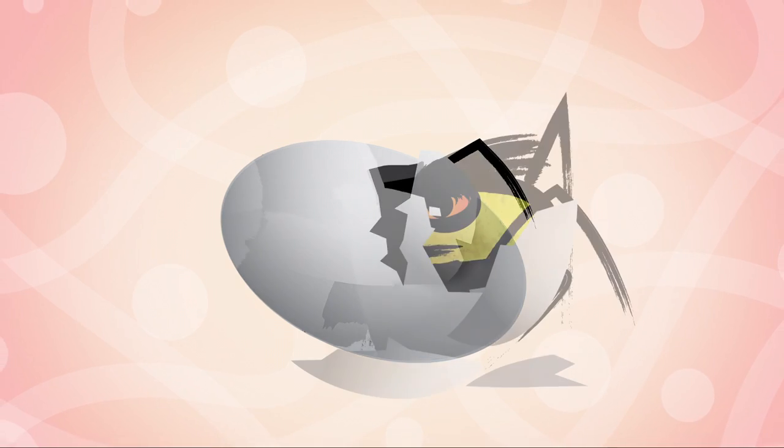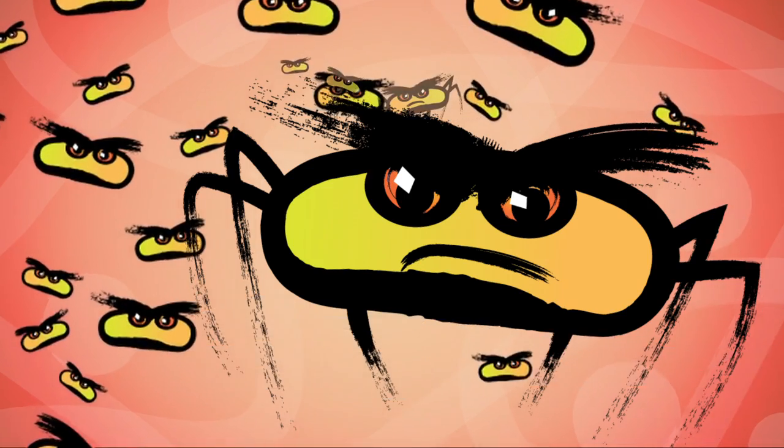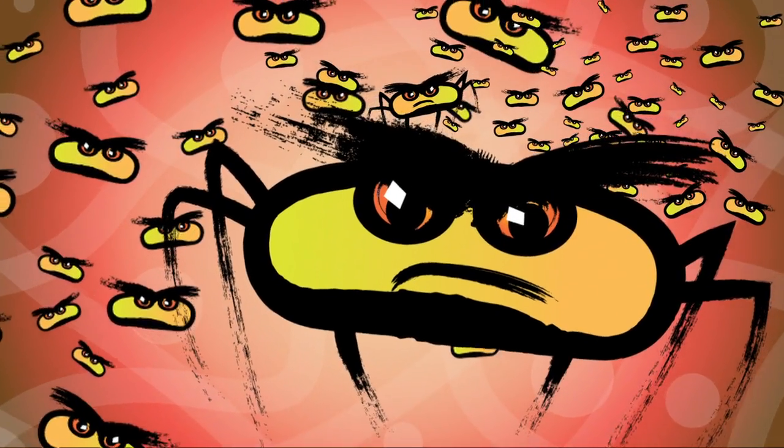If your immune system weakens, it stops strengthening the calcium shell that holds the TB germ. The shell cracks. TB germs burst out and multiply.